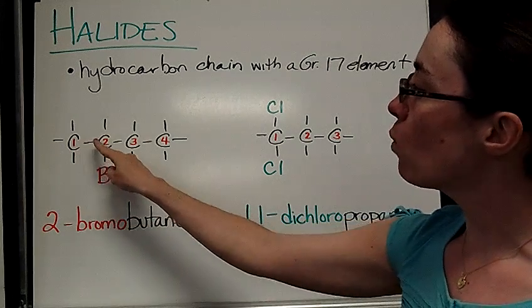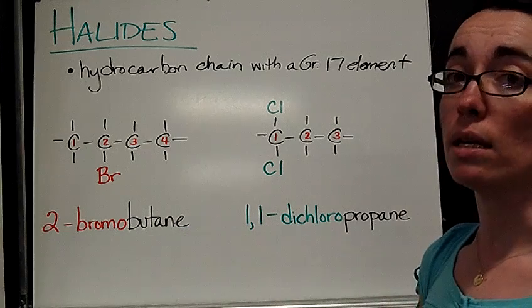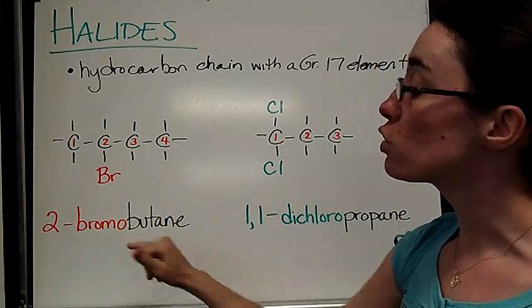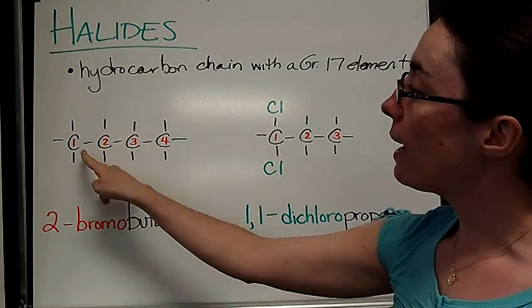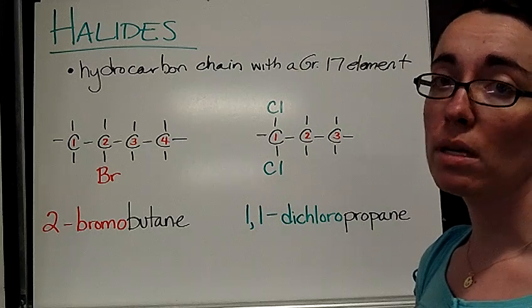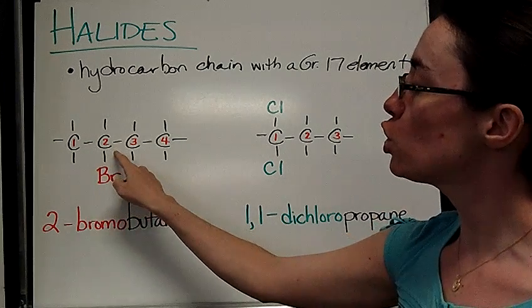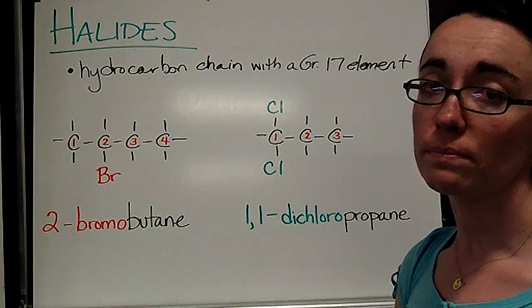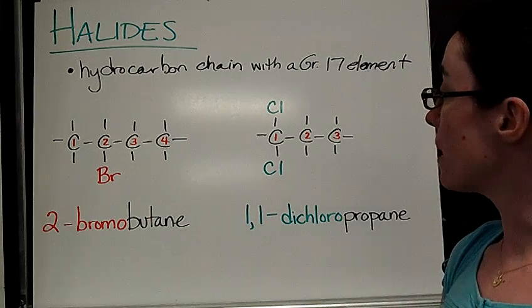So instead of just butane, like if it were just a hydrocarbon chain, we have to indicate that there's a bromine on there. And again we need to number our carbon chain so we can tell people where the bromine is located. This one happens to be 2-bromobutane.